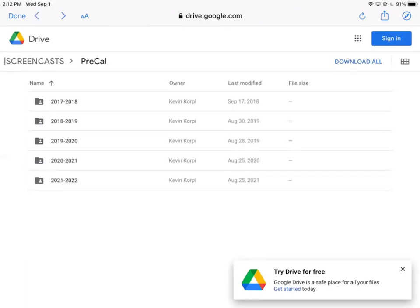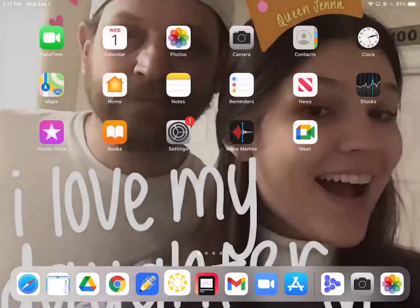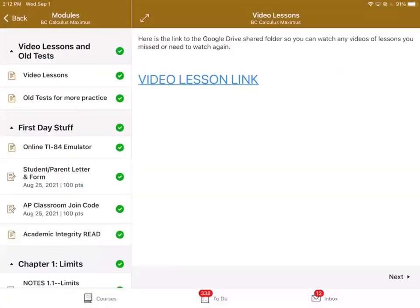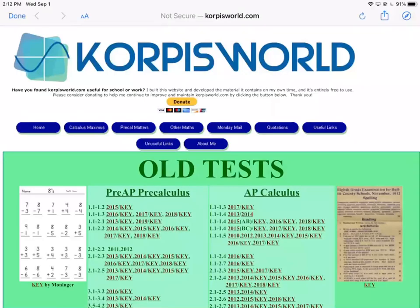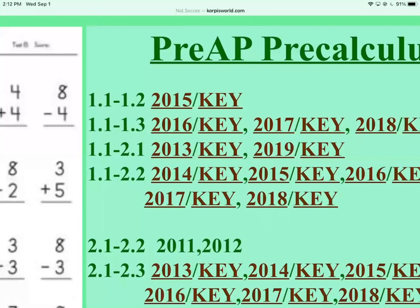The other thing that I put at the top was the old test for more practice. We're going to be testing next week either on Wednesday or Friday. I have to test on A days being a math dude, so we'll test over 1.1 and 1.2. There's a test from 2015 that has the key posted, and then there's several more that start at 1.1 and go a little bit further, because when we test again we'll test over 1.1 through 1.3 or whatever.